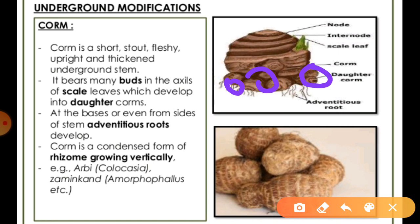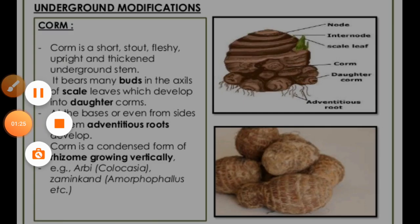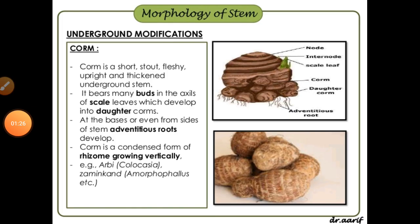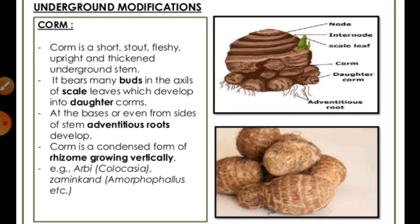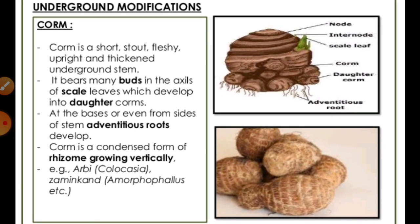When their structure develops, adventitious roots are also developed. We can say corms are a condensed form of rhizome growing vertically. Arvi and jimikandha are general examples of this modification, and agave is also a good example of underground modified stems.